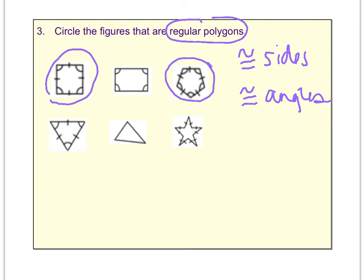Underneath that, the star is not regular because even though the markings show that all the sides are congruent, the angles are not.